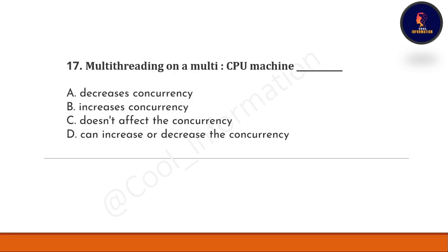Question 17: multi-threading on a multi-CPU machine — Option A: decreases concurrency. Option B: increases concurrency. Option C: does not affect concurrency. Option D: can increase or decrease concurrency. The correct option is B — increases concurrency.